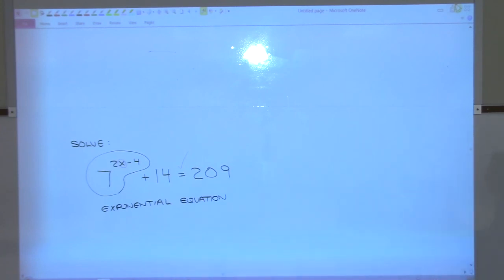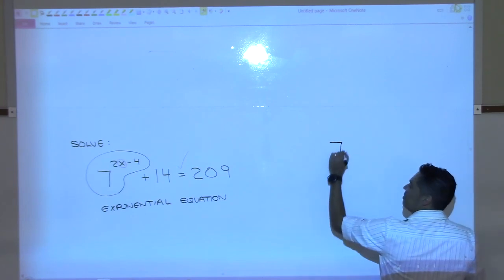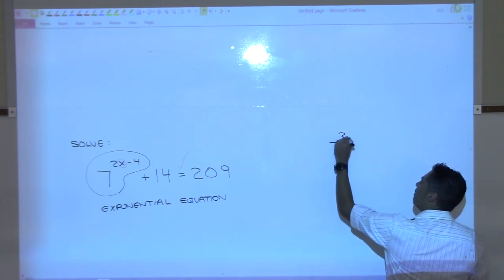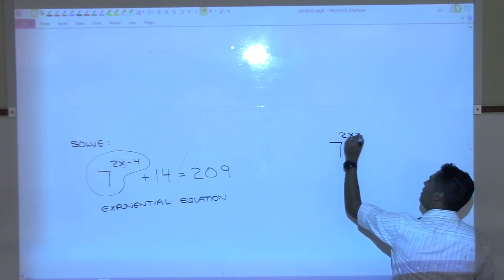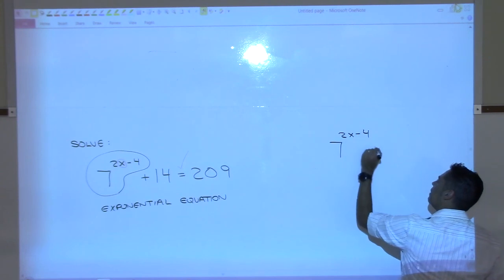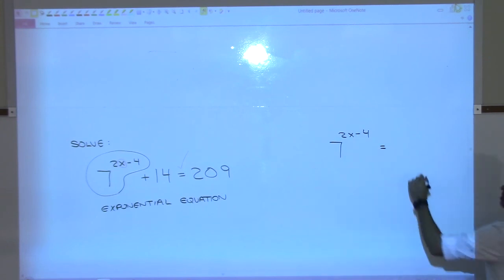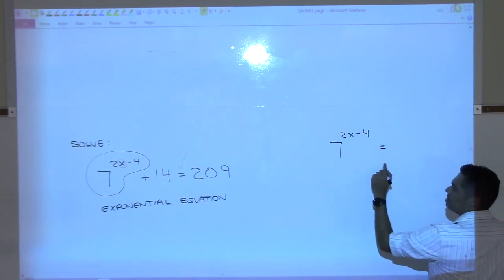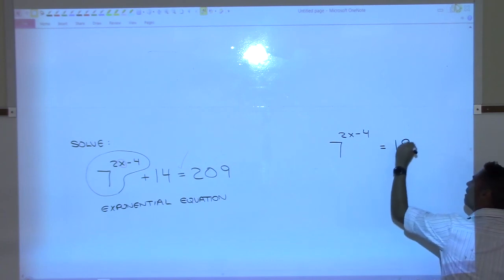Subtract 14. What happens when you take 14 away from 209? 195. So we subtract 14 on both sides and get 195.